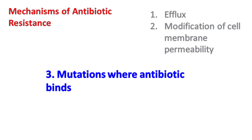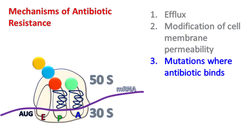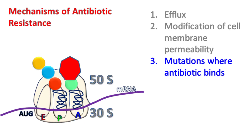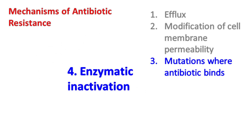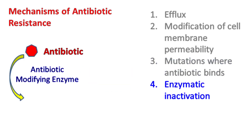Mutations at the site where the antibiotic binds: this is usually seen with antibiotics that inhibit protein synthesis. These antibiotics usually bind the 30S or 50S subunit of the ribosome. If the antibiotic binding site on the 50S or 30S subunit is mutated, then the antibiotic fails to bind the ribosome, and protein synthesis and cell growth continues. Enzymatic inactivation: in this method, the antibiotic is enzymatically inactivated to an inactive form.